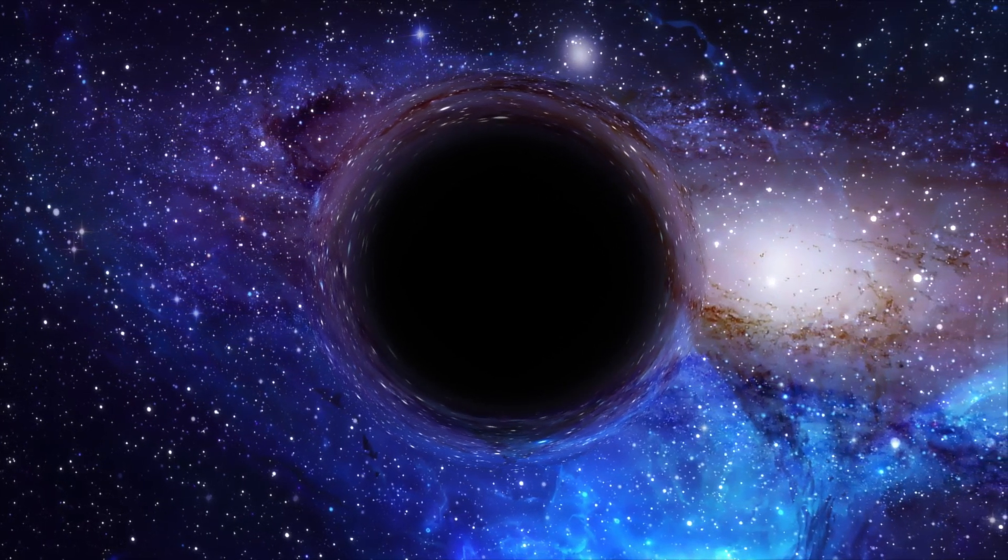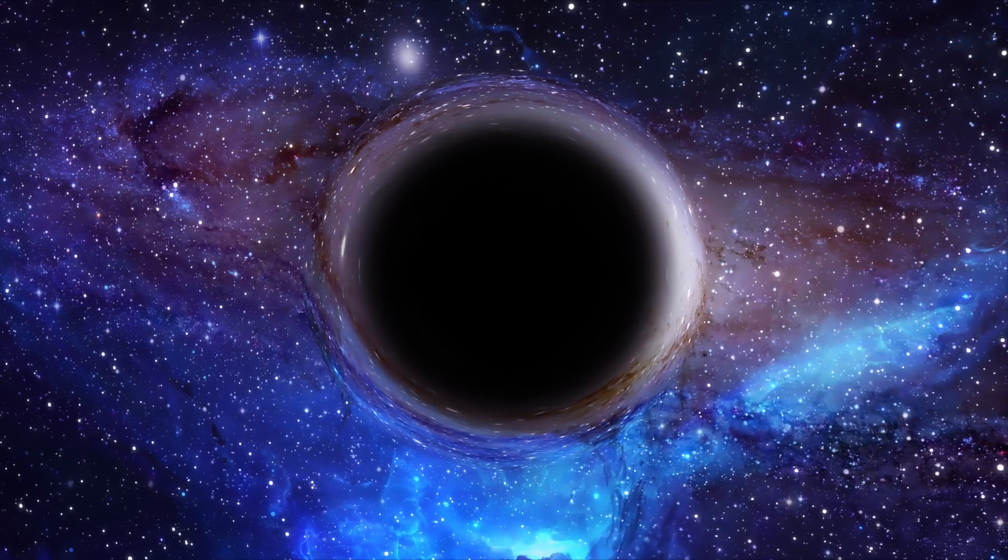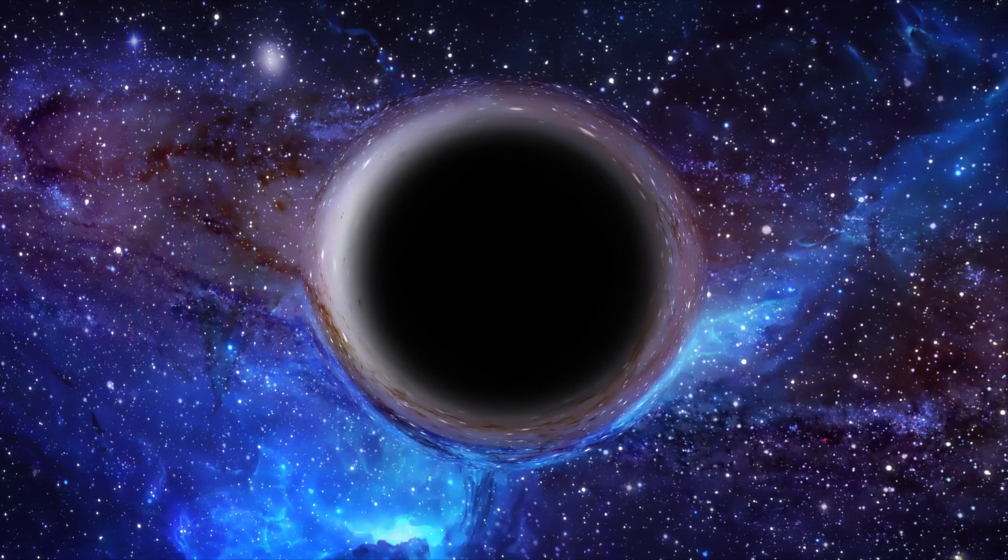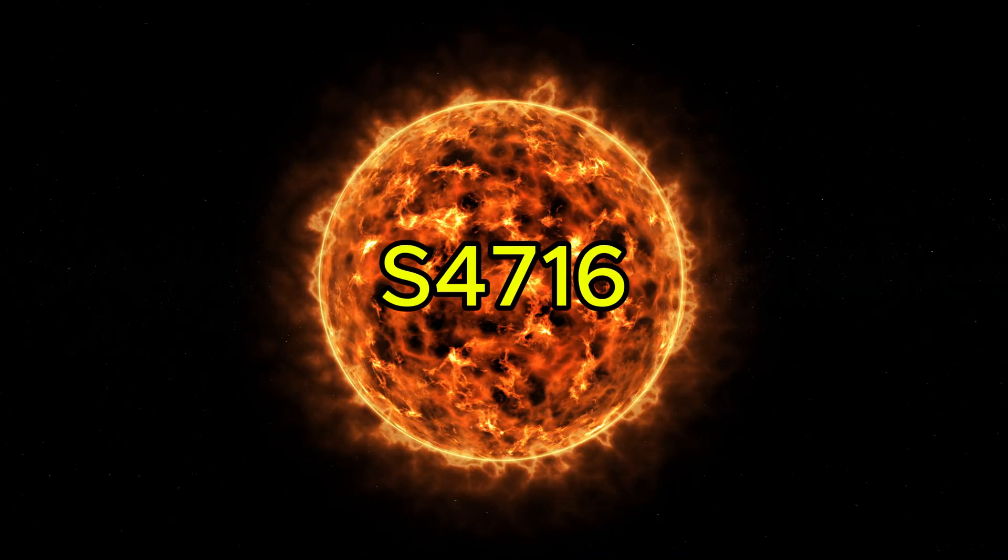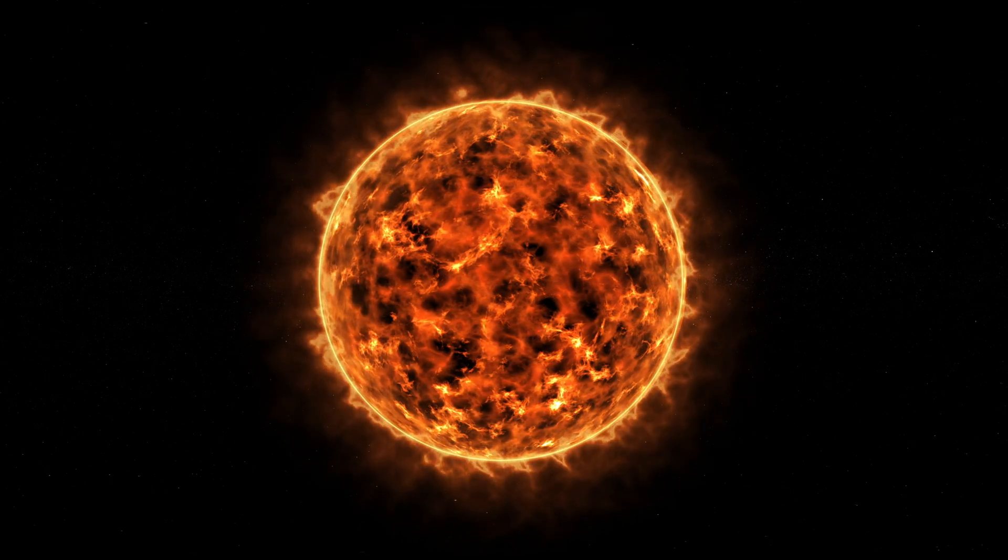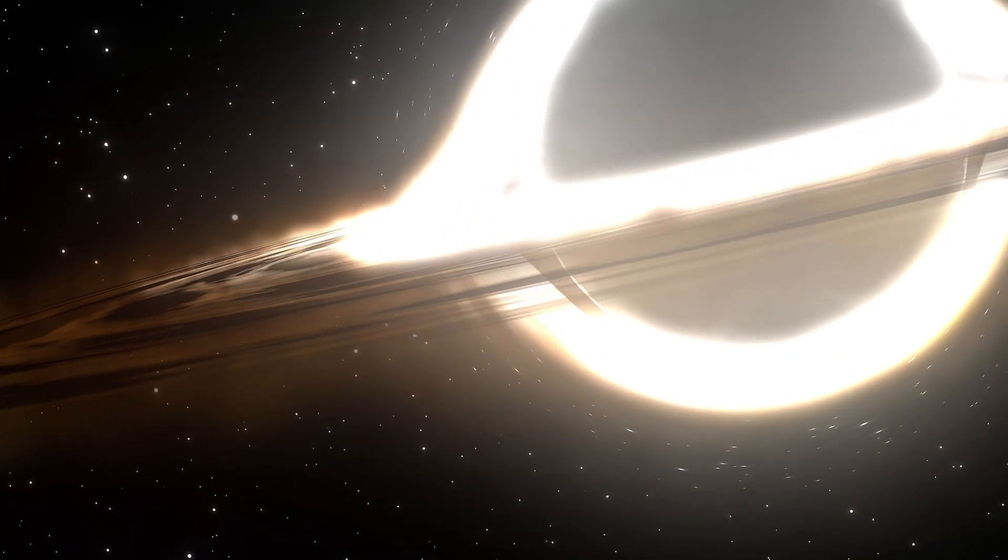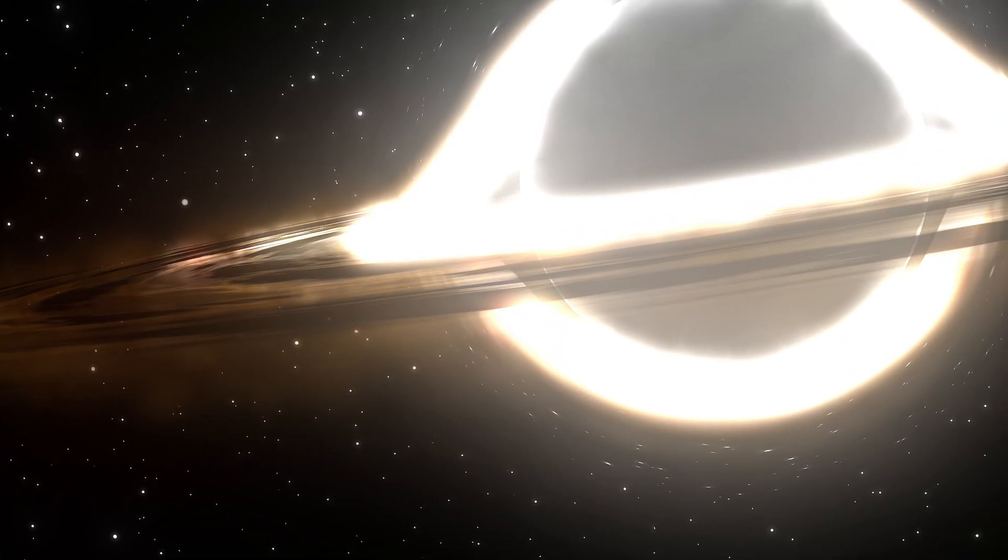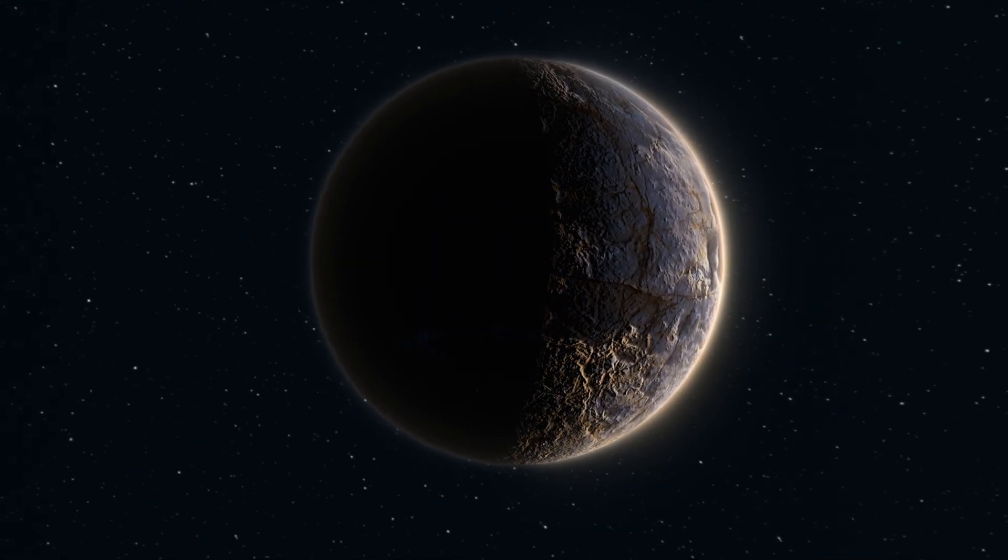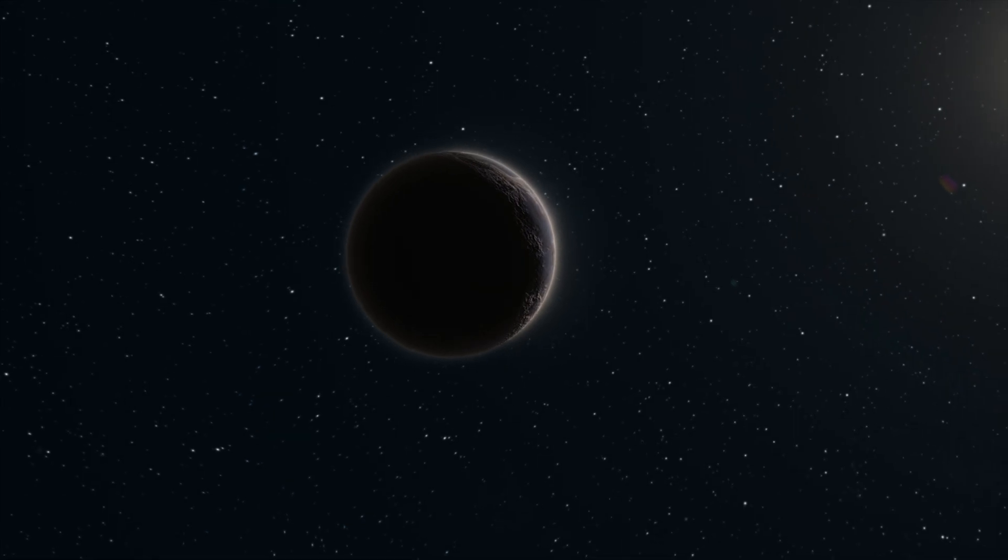At the center of our galaxy lies Sagittarius A*, a supermassive black hole with mass over 4 million times that of our Sun. It's a monstrous, invisible giant warping space and time around it. But what's just as fascinating as the black hole itself is what orbits it. Meet S4716, a star discovered in 2022 that orbits Sagittarius A* in a path so tight it completes a full orbit every 4 hours. That's faster than some people's work shifts. And it's doing this at a speed of nearly 8,000 kilometers per second, about 3% the speed of light. To put that into perspective, Mercury, the fastest planet in our solar system, takes 88 days to orbit the Sun. S4716 makes that look like a casual stroll.